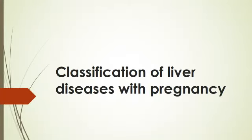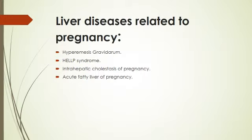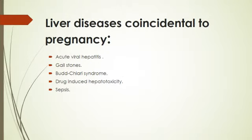Liver diseases in pregnancy are classified into: pre-existing liver diseases present throughout pregnancy with variable course from patient to patient — including chronic hepatitis B and C, autoimmune hepatitis, Wilson's disease, primary biliary cirrhosis, primary sclerosing cholangitis, and cirrhosis due to any cause. Liver diseases related to pregnancy only include intrahepatic cholestasis of pregnancy, HELLP syndrome, and acute fatty liver disease.